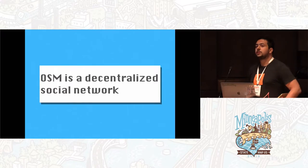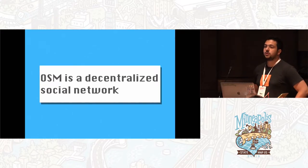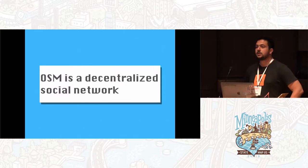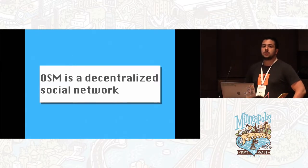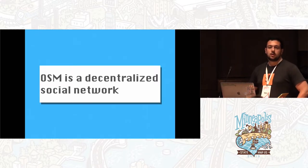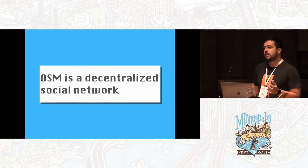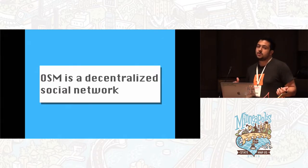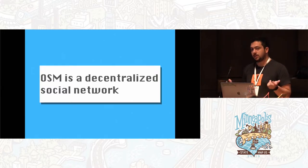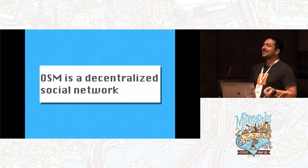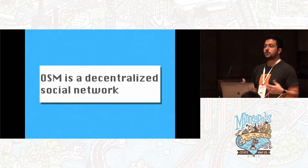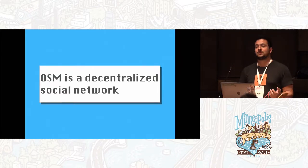As Jennings was saying, OSM is sort of like a decentralized social network. There are disparate groups and small communities that map together, but there are also these organized teams and organized editing efforts. But OSM is also not a social network in the way that we know social networks — first of all, it's not evil, or we hope it's not. But it doesn't have the tools to group together and it doesn't have those social features.